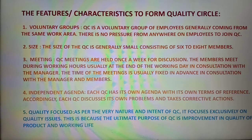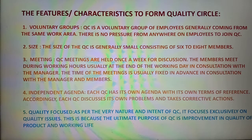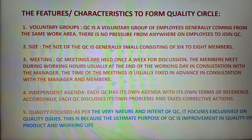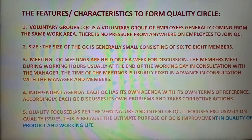Fourth feature is independent agendas: Each quality circle has its own agenda with its own terms of reference. Each quality circle discusses its own problems and takes corrective actions. Fifth feature is quality focused: As per the very nature and intent of quality circle, it focuses exclusively on quality issues. This is because the ultimate purpose of quality circle is improvement in quality of product and working life.